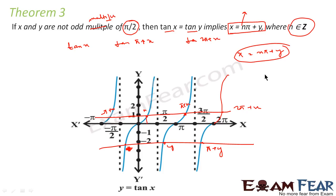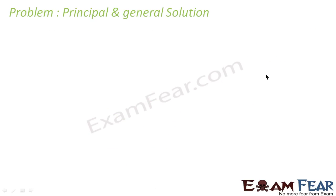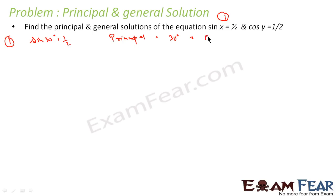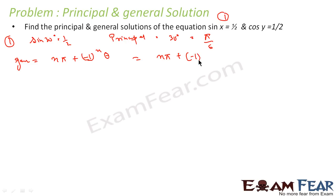Let's take a problem on principal and general solutions. We are asked to find the principal and general solution for sin x equals 1/2. We know that sin 30° equals 1/2. So the principal solution is 30°, which is pi by 6. For the general solution, we use the formula n·pi plus minus 1 to the power n times theta, which gives n·pi plus minus 1 to the power n times pi by 6.